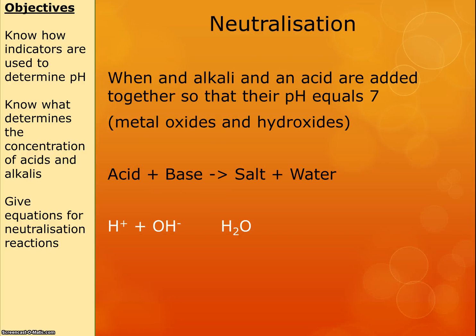Neutralisation: when we add an alkali and an acid in the right amounts so the pH becomes 7, they neutralise each other — that's a neutralisation reaction. If the base has a name ending in oxide or hydroxide — like sodium oxide, sodium hydroxide, potassium oxide, or potassium hydroxide — the general equation is: acid plus base goes to salt plus water.